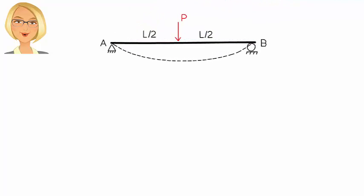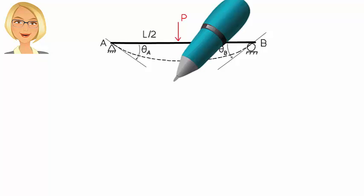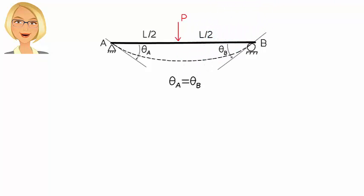There is a clockwise rotation at A and a counterclockwise rotation at B. Let's refer to these as theta A and theta B respectively. Due to the symmetrical nature of the beam, theta A equals theta B.